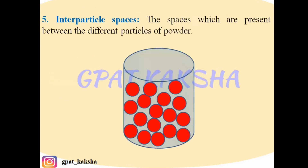Interparticle spaces are the spaces present between different particles of powder. If you fill powder in a container, after the particles arrange themselves inside, void spaces remain present between the different particles — these are known as interparticle spaces.